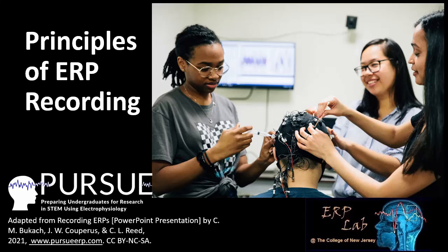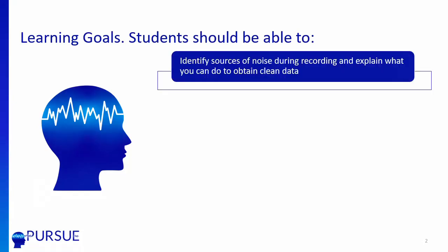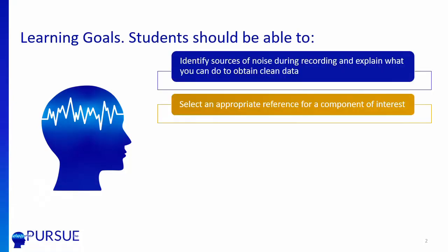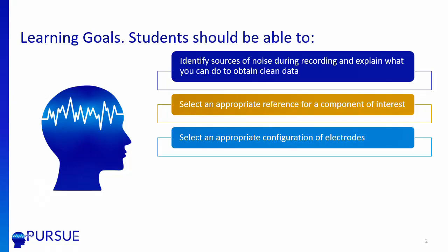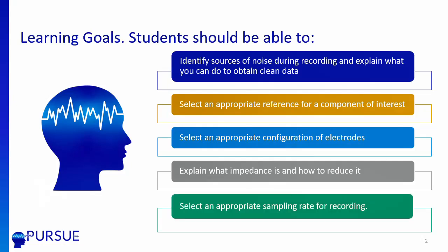This video is going to cover some detailed principles of ERP recording. It was made possible by materials from PURSUE — Preparing Undergraduates for Research Using Electrophysiology — at PursueERP.com. After watching this video, you should be able to identify sources of noise, select an appropriate reference, select an appropriate configuration of electrodes, explain what impedance is and how to reduce it, and select an appropriate sample rate.